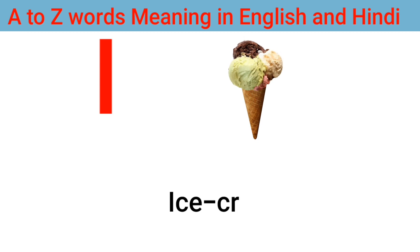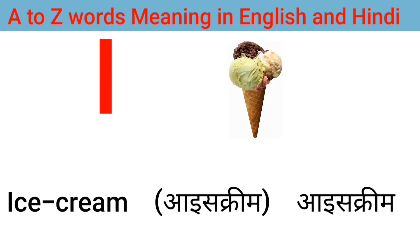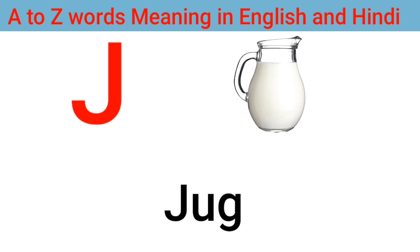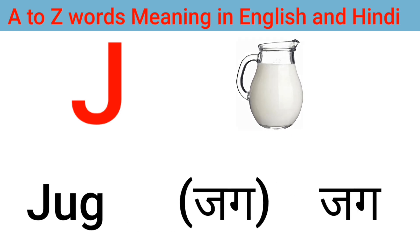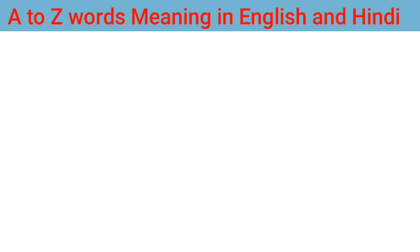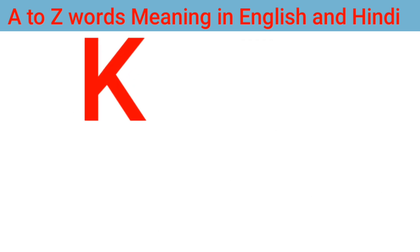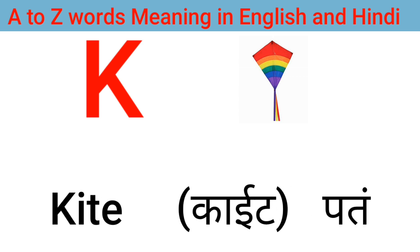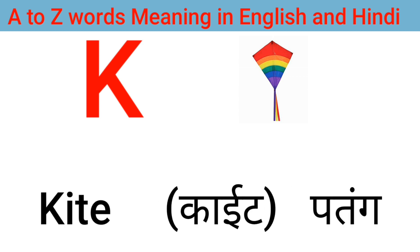I for ice cream, ice cream means ice cream. J for jug, jug means jug. K for kite, kite means patan.